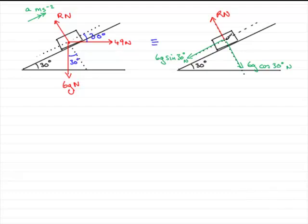So what we'll do is we'll just mark those forces in here. One up the plane, which is going to be 49 cos 30 degrees, and that's in newtons.